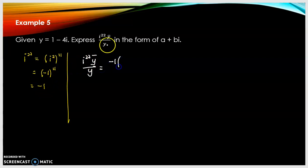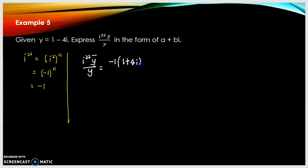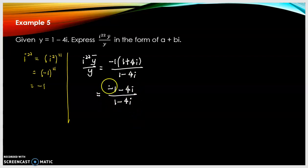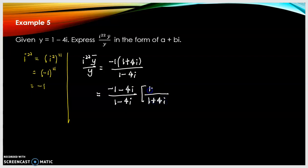Substituting, i²² times conjugate of y over y becomes negative 1 times (1 plus 4i) over (1 minus 4i). Expanding the numerator: negative 1 times 1 is negative 1, and negative 1 times 4i is negative 4i. To convert the division into standard form a plus bi, we multiply numerator and denominator by the conjugate of the denominator, which is 1 plus 4i.